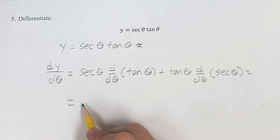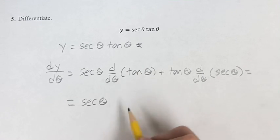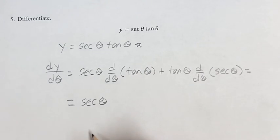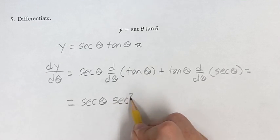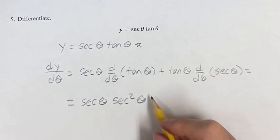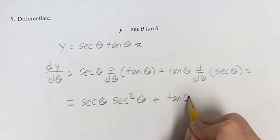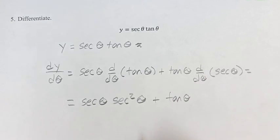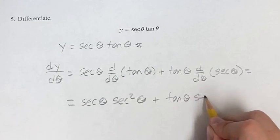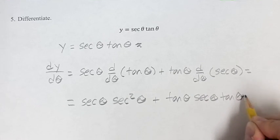So this is equal to, we have secant theta, times the derivative of tangent theta, is secant squared theta, plus tangent theta, the derivative of secant theta, is secant theta tangent theta.